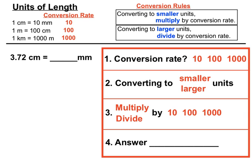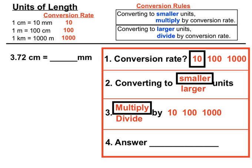Let's look at the first example: 3.72 centimetres — we want to convert that into millimetres. Centimetres is a bigger unit than millimetres, so we're converting into a smaller unit. The conversion rate between centimetres and millimetres is 10. Since we're converting to a smaller unit, we'll be multiplying by the conversion rate of 10.